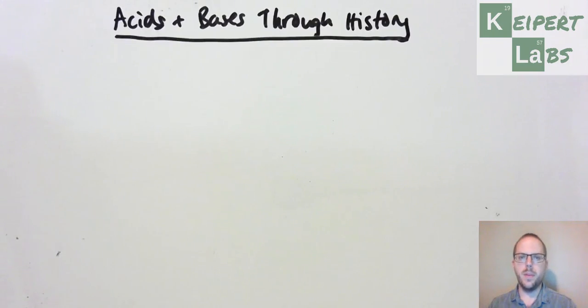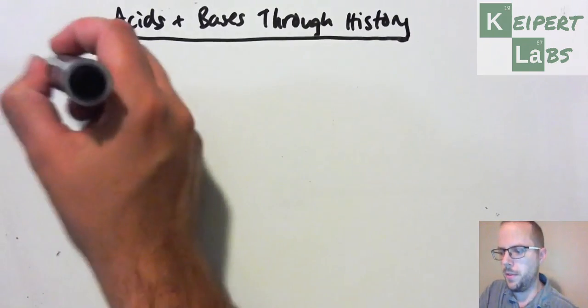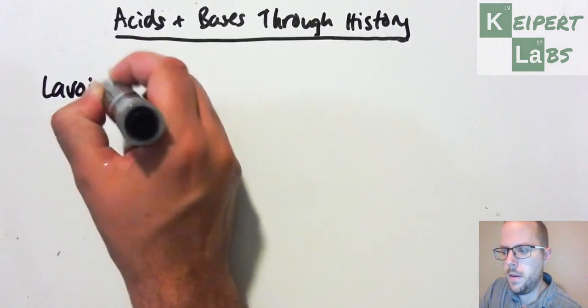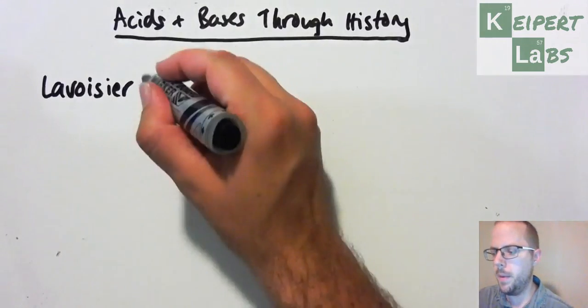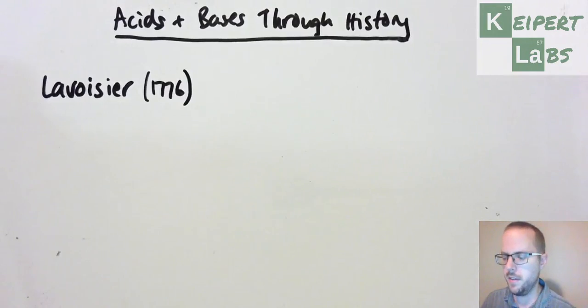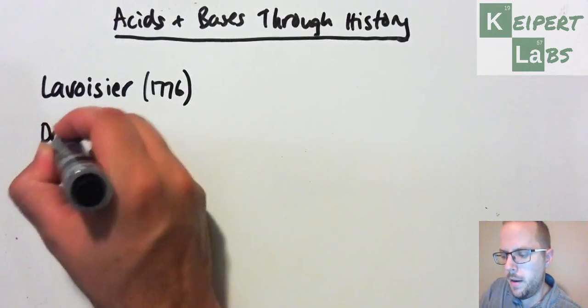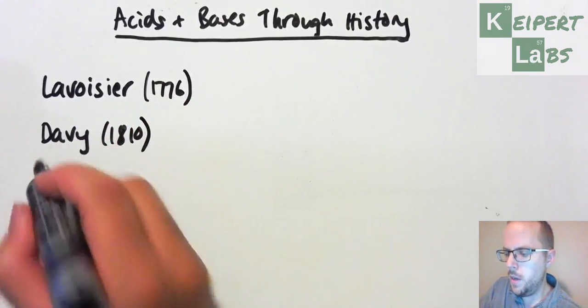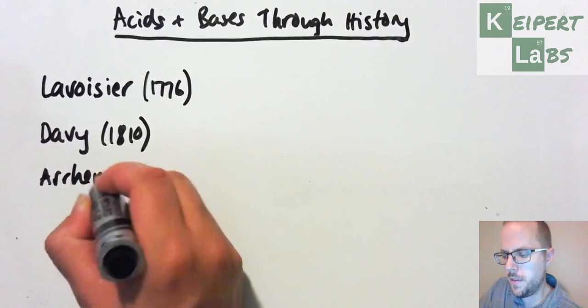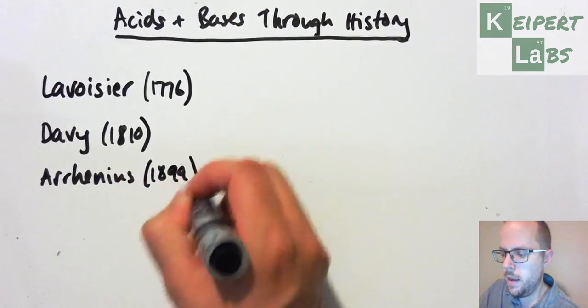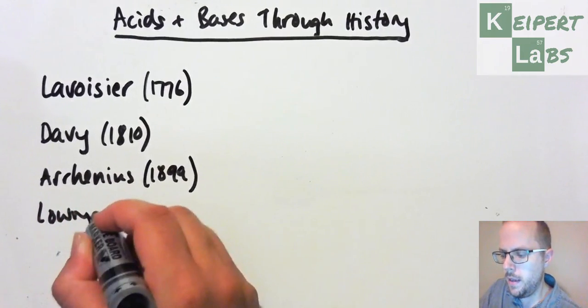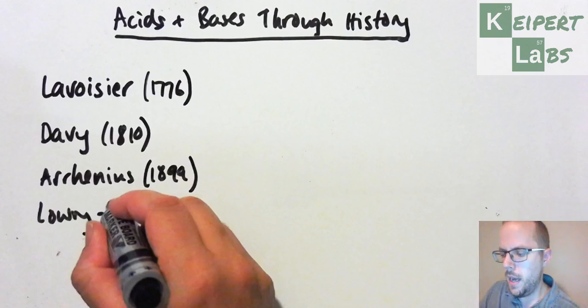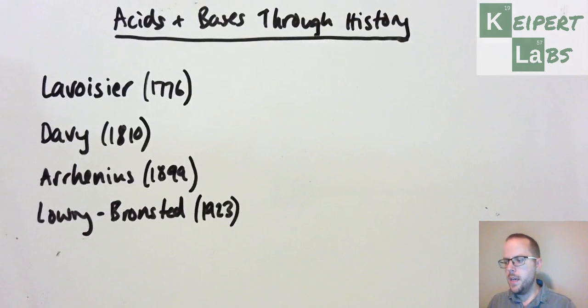We're going to try and keep this really short and sweet, introduce you to some of the key theorists and a little bit of information about their ideas, as well as then showing you how the ideas have developed. So there's four main theorists that we need to be familiar with here. The first one was a man named Lavoisier in 1776. We then come to Humphrey Davy in 1810. We get to a Swedish chemist, Svante Arrhenius in 1899, and then two chemists, Lowry who was British and Bronsted who was Danish, who simultaneously but separately proposed the most modern kind of theory that we're going to focus on.